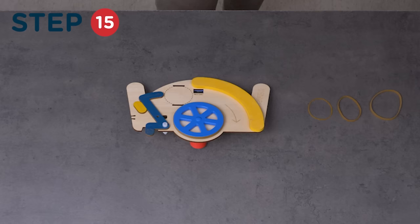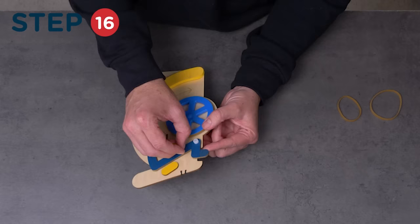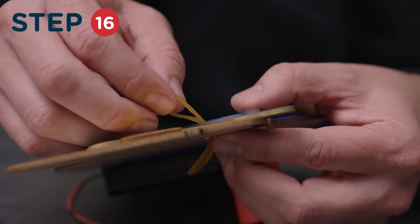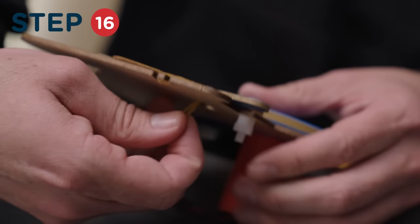Next, grab the smallest of the three rubber bands and loop it through the smallest hole in the trigger bar. It should pop out the back of the wood launcher. Then, loop both sides of the rubber band around the notch on the right side of the wood launcher.